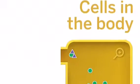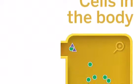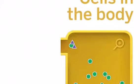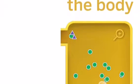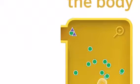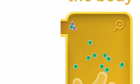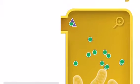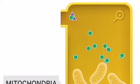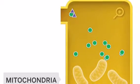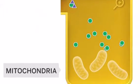The cells in the body take in lots of molecules including carbon dioxide, water, amino acids, glucose, and oxygen. In the cell, the mitochondria take in six oxygen molecules and one glucose molecule to produce water and carbon dioxide.